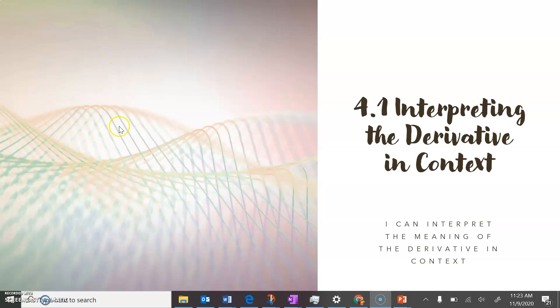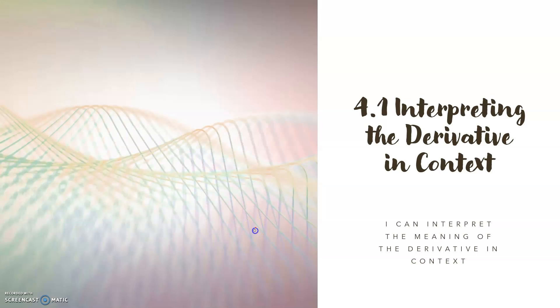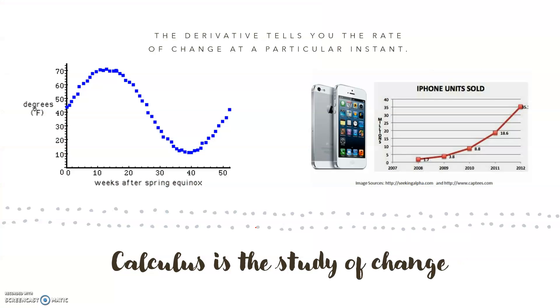Section 4.1 is all about understanding what your derivative is telling you in the context of real-world problems. Calculus is all about studying change, and the derivative is a really good way of doing that because it tells you the rate of change at just a particular instant. So the rate of change for t equals 20 will be different from the rate of change for t equals 40, for example.